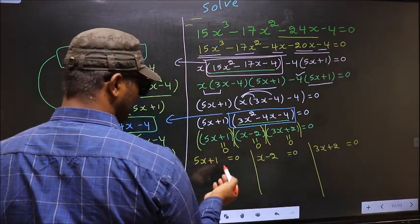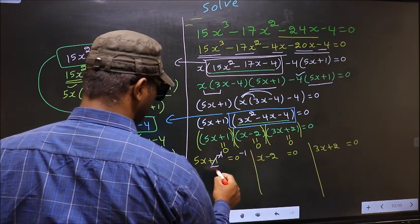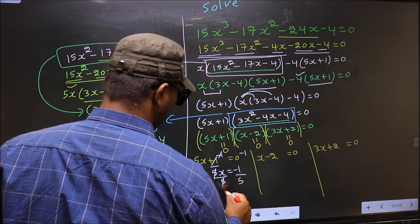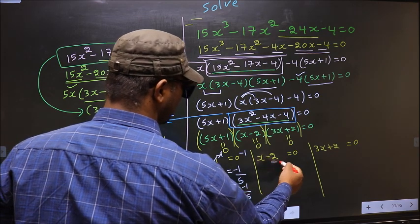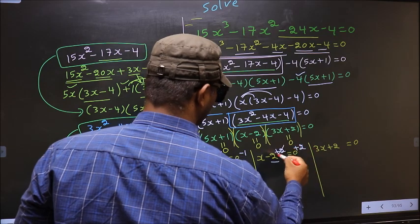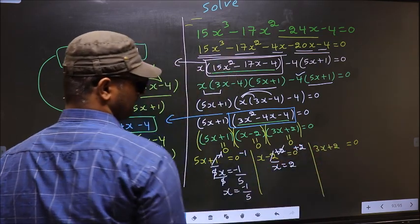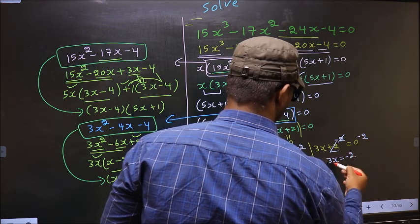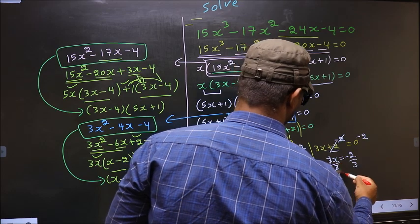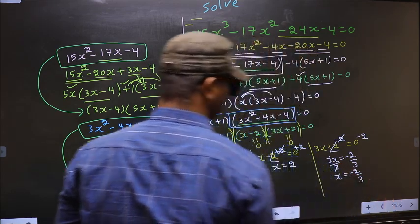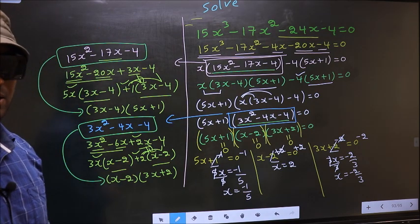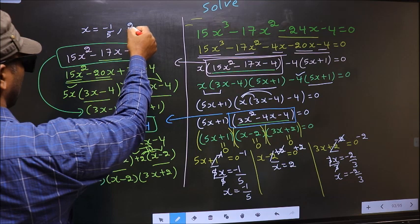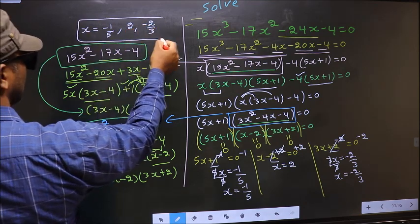From 5x plus 1 equal to 0: subtract 1 to get 5x equal to minus 1, then divide by 5, you get x equal to minus 1/5. From x minus 2 equal to 0: add 2, you get x equal to 2. From 3x plus 2 equal to 0: subtract 2 to get 3x equal to minus 2, then divide by 3, you get x equal to minus 2/3. So the x values are minus 1/5, 2, and minus 2/3. This is our answer.